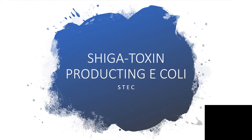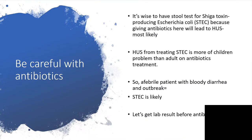There is a separate presentation — a type of toxin produced by a group of STEC: Shiga toxin-producing E. coli. We have to be careful with antibiotics here. It is wise to withhold antibiotics for Shiga toxin-producing STEC because if we give antibiotics, we may likely cause hemolytic uremic syndrome.